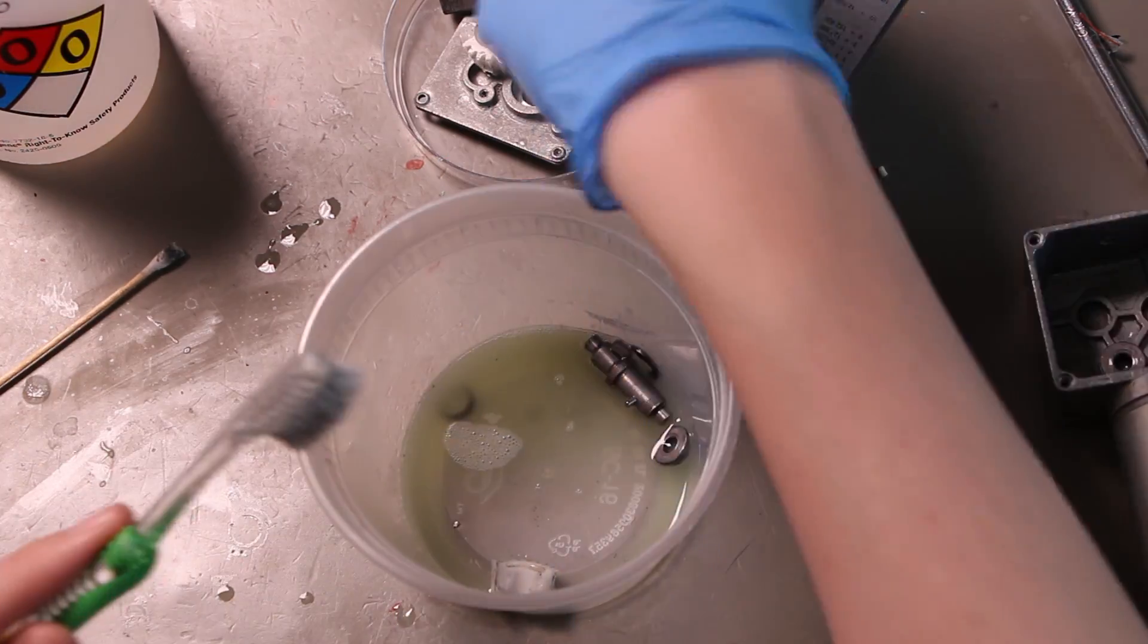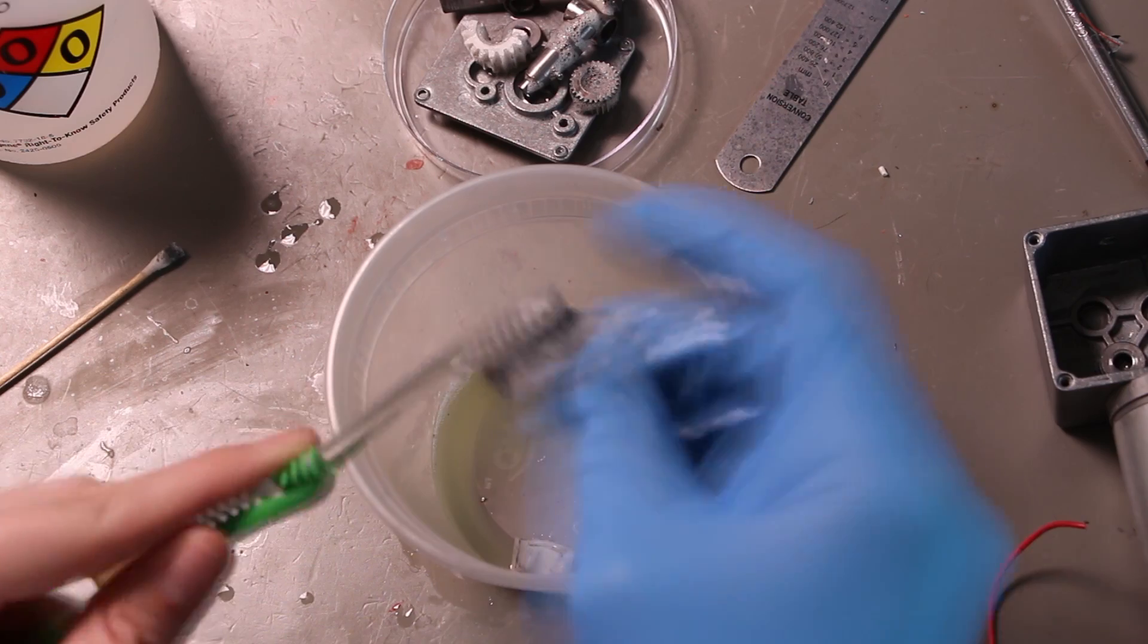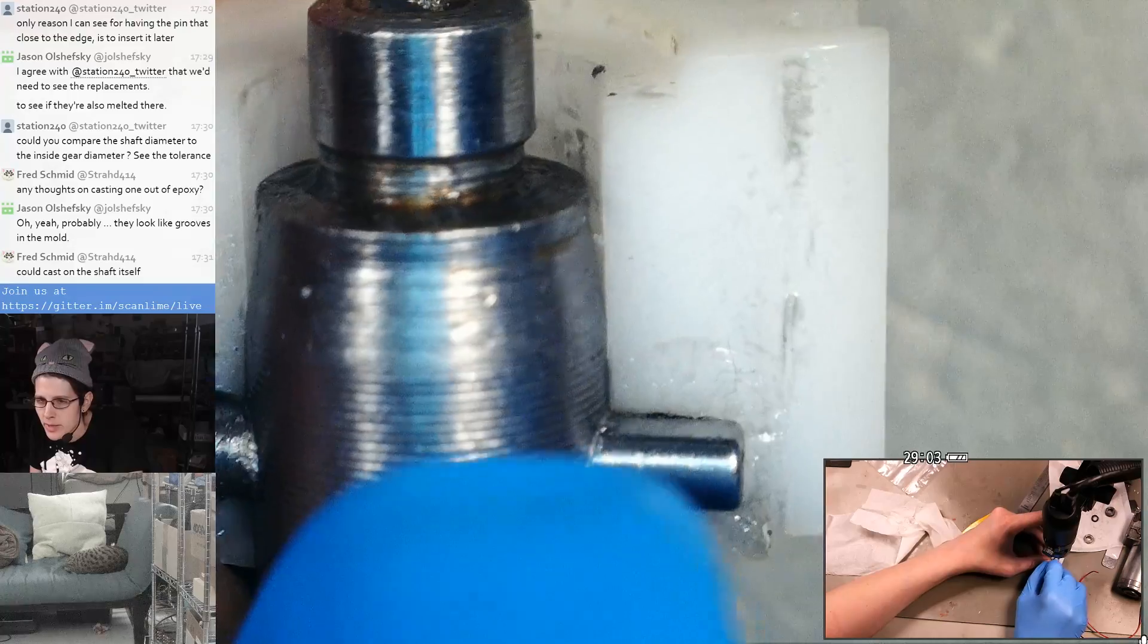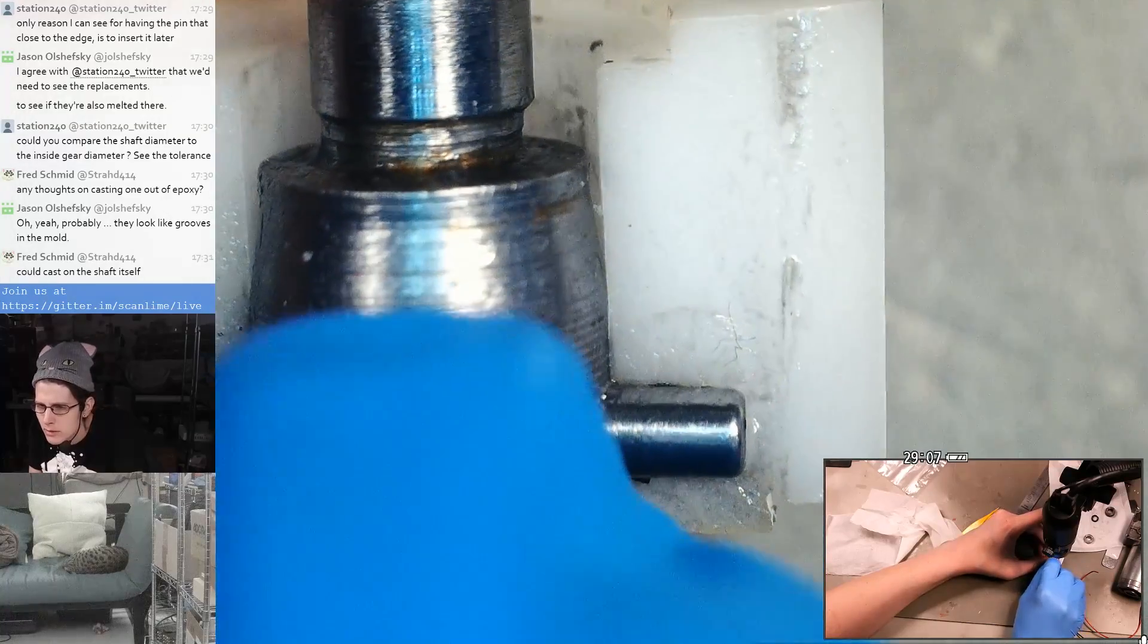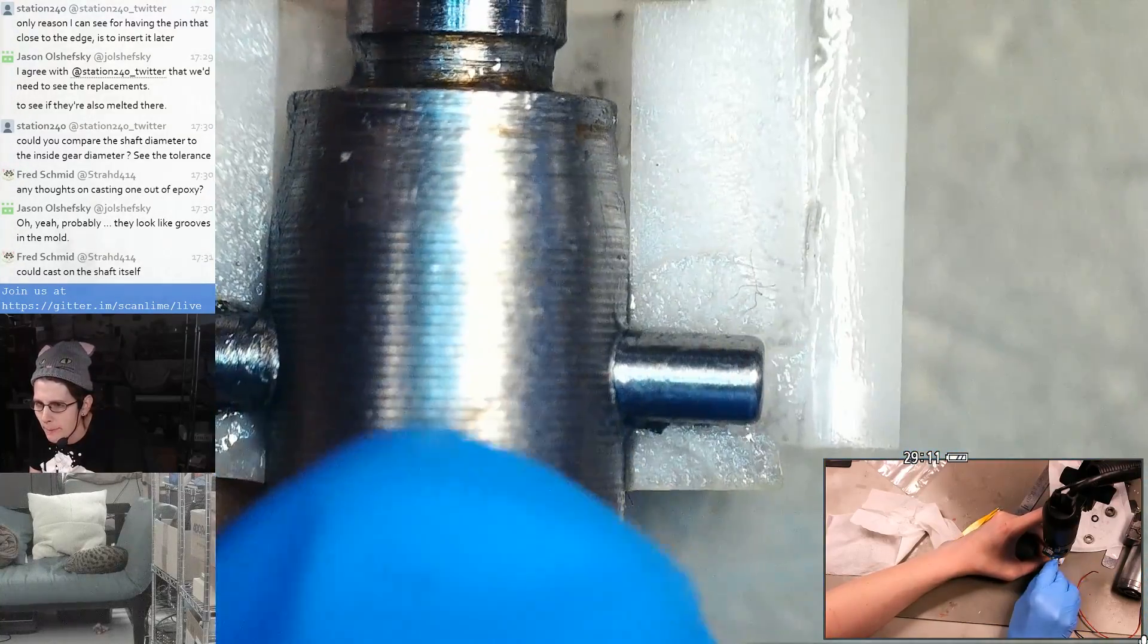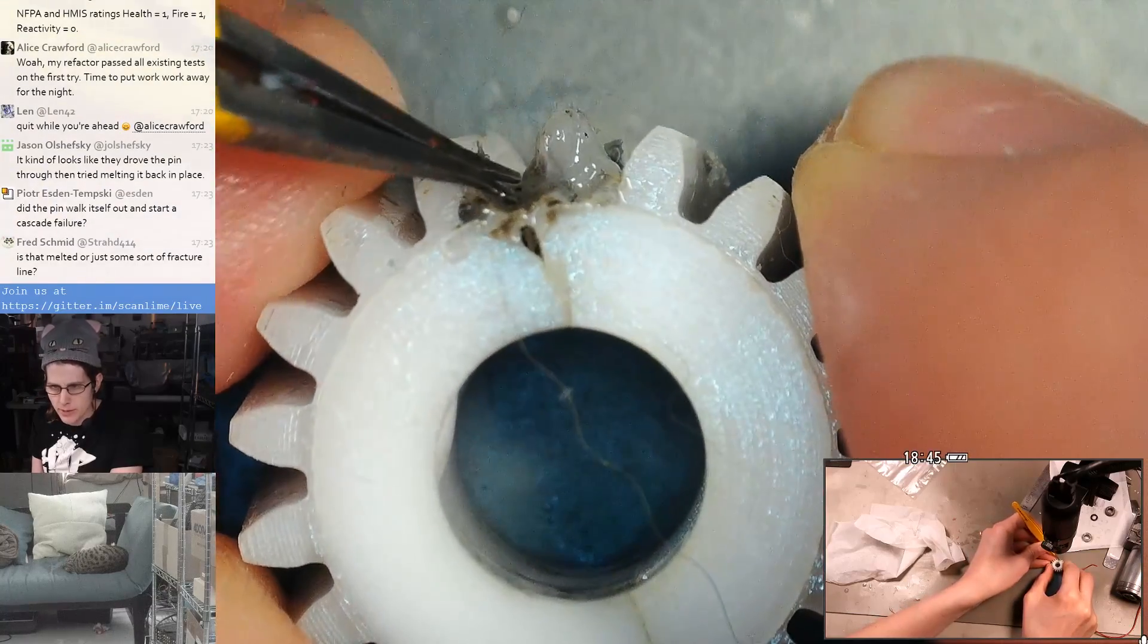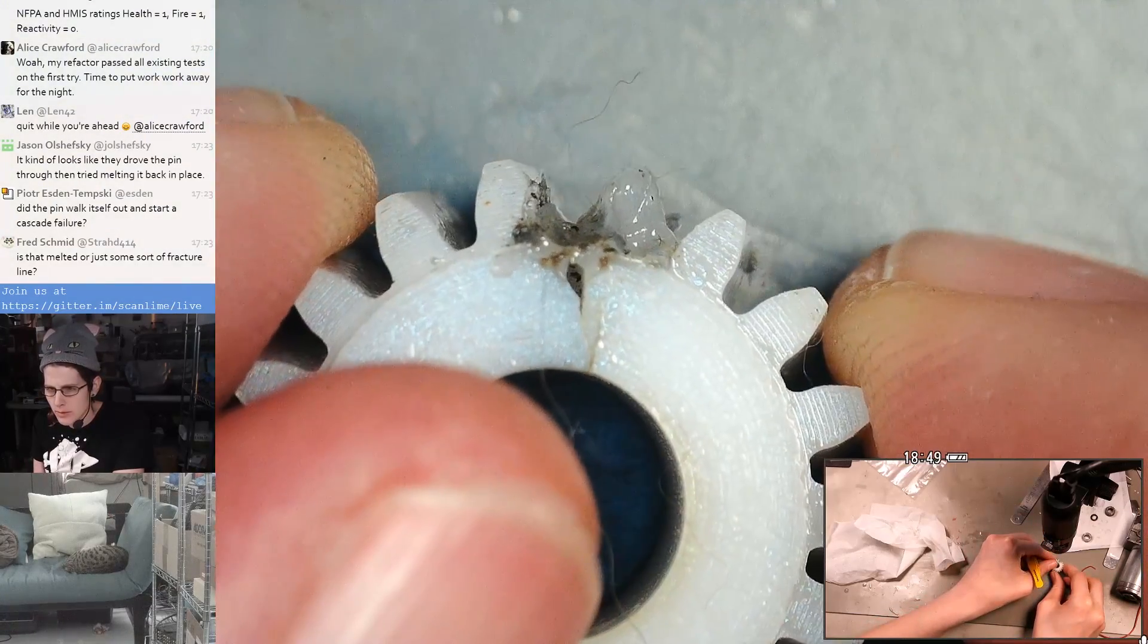So here, after getting the shmoo off the gearbox and taking a closer look at the gear under the microscope, you can see really clearly that it splits along pretty much exactly where that pin was inserted through the gear. And it looks like the pin was forced in during manufacture, and then melted over with some kind of hot tool.